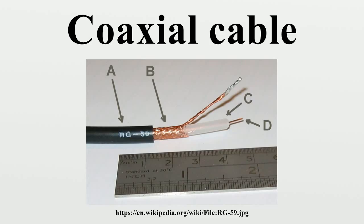One advantage of coaxial over other types of radio transmission line is that in an ideal coaxial cable the electromagnetic field carrying the signal exists only in the space between the inner and outer conductors. This allows coaxial cable runs to be installed next to metal objects such as gutters without the power losses that occur in other types of transmission lines. Coaxial cable also provides protection of the signal from external electromagnetic interference.